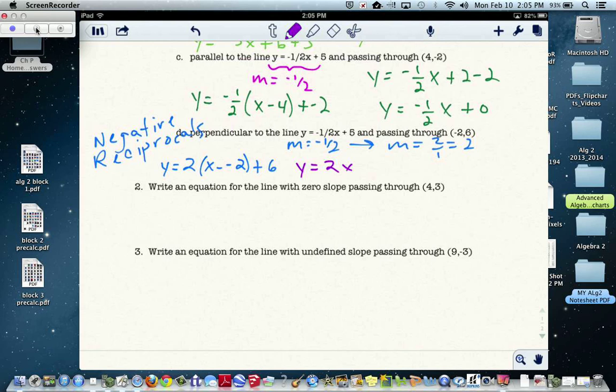The double negative is a positive 2, so when you distribute the 2 to the positive 2, you get 4, and then plus 6. Simplifying, you end up with y equals 2x plus 10.